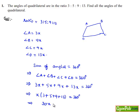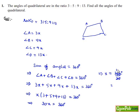So that will be 30x is equal to 360 degrees. By transposing 30 to the right-hand side, we get x is equal to 360 degrees divided by 30, and 30 goes into 360 twelve times. So we got x is equal to 12 degrees.